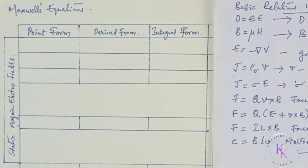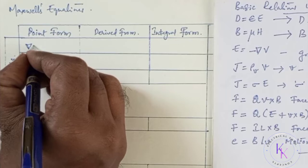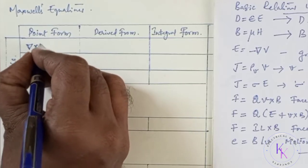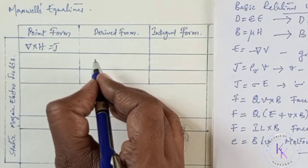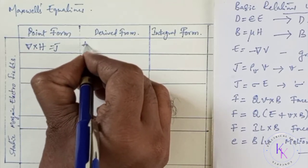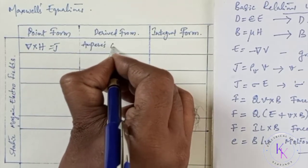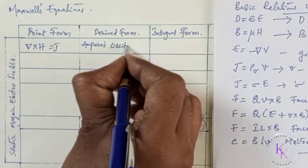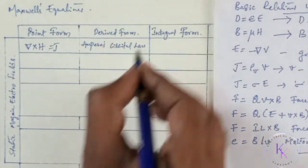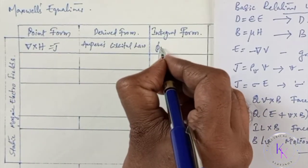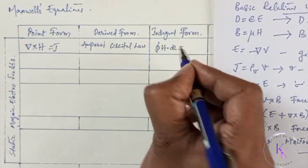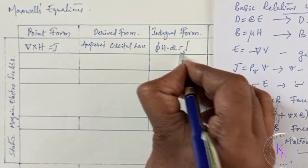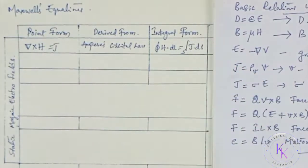Let us try to write Maxwell's equations. In point form: del cross H equals J. This is derived from Ampere's circuital law. In integral form, this can be written as the closed line integral of H dot dL equals the surface integral of J dot dS.